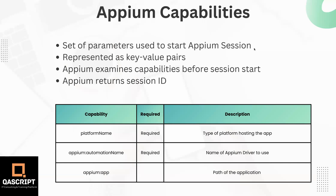Once we start a session, Appium will examine the capabilities and make sure that it can satisfy them before proceeding to start the session. Once it is able to start the session with all these capabilities, it will return a session ID, which is like a reference for that particular session and can be used in later stages. Now let's look at how these capabilities look in a table.